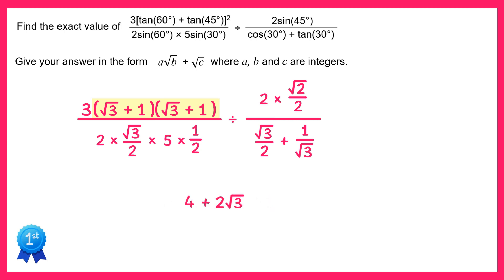So let's replace the double bracket with 4 plus 2 root 3. We can also expand this bracket on the top - we just need to times it by 3. 3 times 4 is 12 and 3 times 2 root 3 is 6 root 3. Now let's look at the bottom of this fraction. These two 2's here would cancel out leaving you with root 3, and then if we multiplied all of this we'd get 5 root 3 over 2.